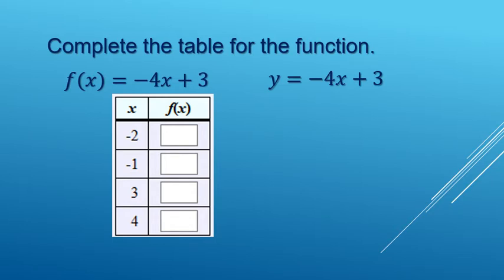All right. So here we're going to be finding some corresponding outputs. Our function is negative 4x plus 3. That is going to be negative 4 times whatever x is plus 3.